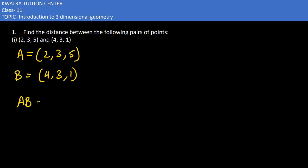we will use the distance formula. And what is our distance formula? x2 minus x1 square, y2 minus y1 square, and z2 minus z1 square. Now you can substitute all the values.